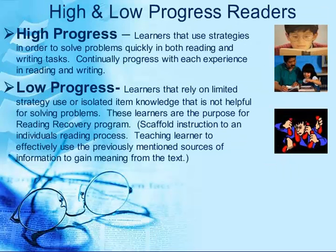High and low progress readers. High progress: learners that use strategies in order to solve problems quickly in both reading and writing tasks, and continually progress with each experience in reading and writing. Low progress: learners that rely on limited strategy use or isolated item knowledge that is not helpful for solving problems. These learners are the purpose for the Reading Recovery program.